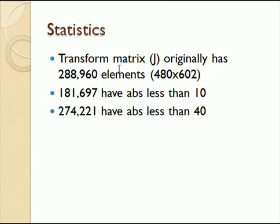Just some numbers: the picture is 480 by 602, so it has 288,960 pixels in it. Roughly 180,000 of the frequencies have an absolute value less than 10. So in the first compression, I throw out 180,000 of the 290,000 frequencies. In the second pass, when I throw out those less than 40, I throw out 274,000 — so I'm only keeping about 14,000 to 15,000 pixels out of 300,000. If I get a good picture out of that, then I've done quite a bit with compression.